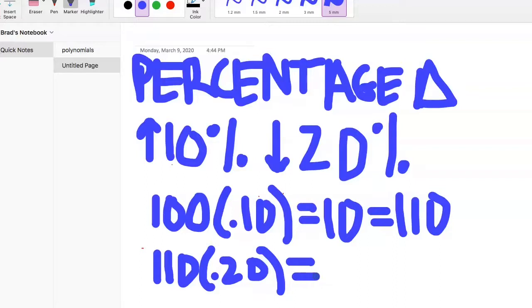110 times 0.2 is, now it's going to go down 22. So 110 minus 22 equals 88.